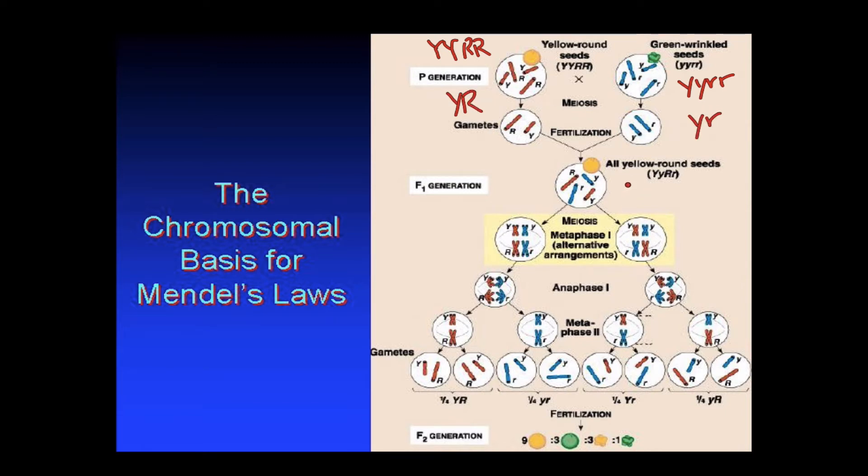Then we get fertilization, and we produce the familiar hybrid that we've already been talking about. And then, because of independent assortment, we can mate two of these individuals and end up with the 9-3-3-1 ratio of the F2 down here, this generation that we've talked about before.